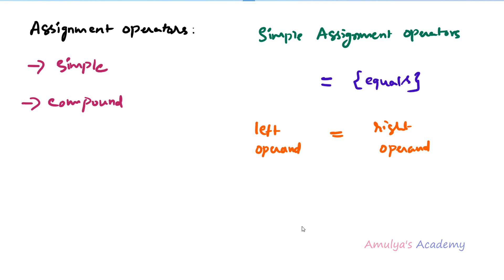For example, we can write a equal to 10, so we are assigning 10 to the variable a. Or we can write b equal to a. These are the examples of simple assignment operator.